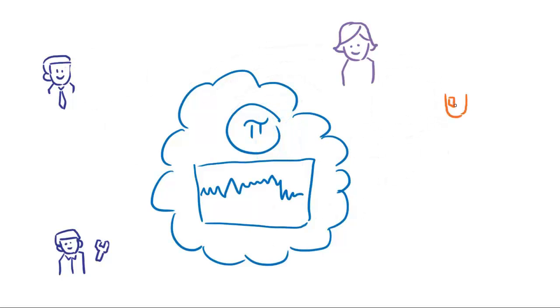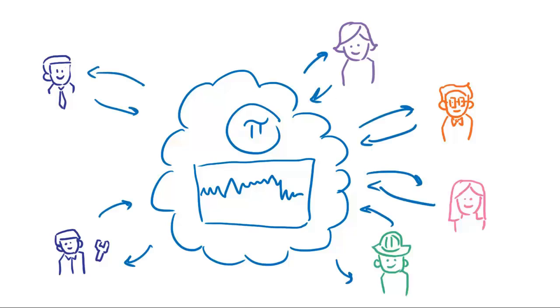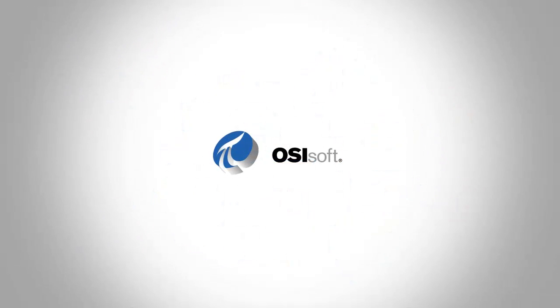OSIsoft has built the Pi system since 1985. We have single-plant customers, and we have global customers. They use the Pi system for many things. But it comes down to connecting engineers, operators, analysts, managers, and companies to their data. And we do it really well.